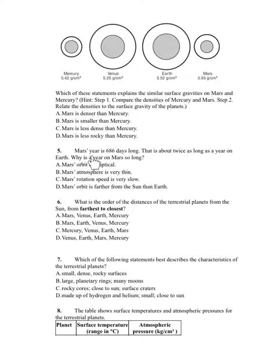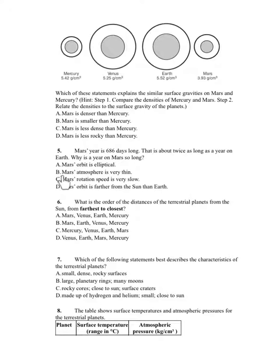Number 5. Mars' year is 686 days long — that is about twice as long as a year on Earth. Why is a year on Mars so long? A. Mars' orbit is elliptical. B. Mars' atmosphere is very thin. C. Mars' rotation speed is very slow. D. Mars' orbit is farther from the Sun than Earth.